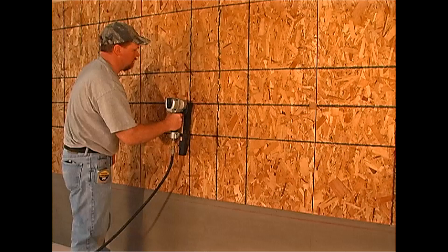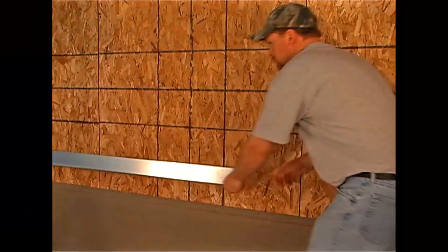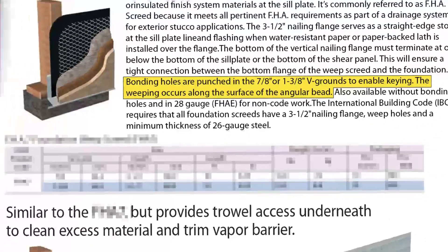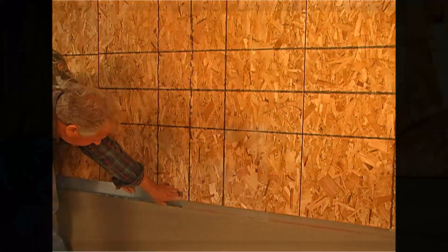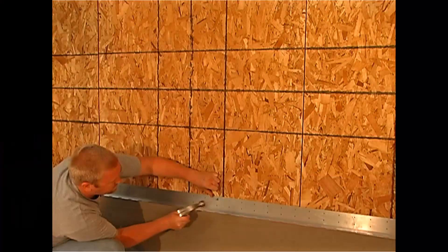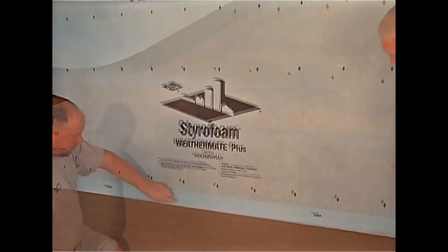Fasten and space sheathing as required by code. For the bottom termination, we will be using the LNR weep screed. The literature for most weep screeds clearly states that they do not weep. The LNR weep screed is the only weep screed designed to weep and ventilate rain screen wall systems. The weep screed is installed at or below the foundation plate line, fastened to the framing and/or foundation. Apply the code-required weather-resistive barrier over the sheathing per manufacturer's instructions. The weather-resistive barrier should lap the attachment flange of the LNR weep screed.